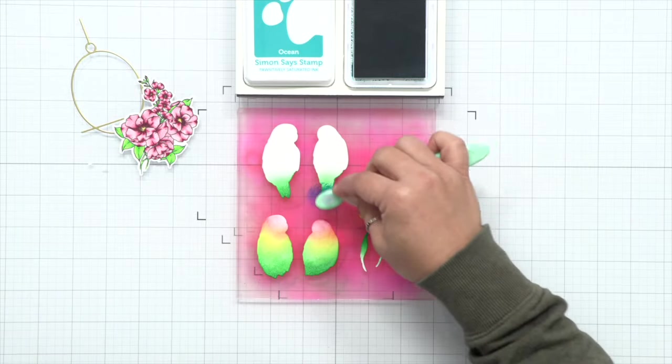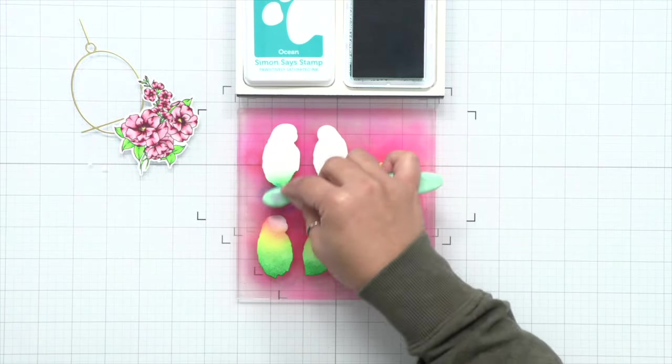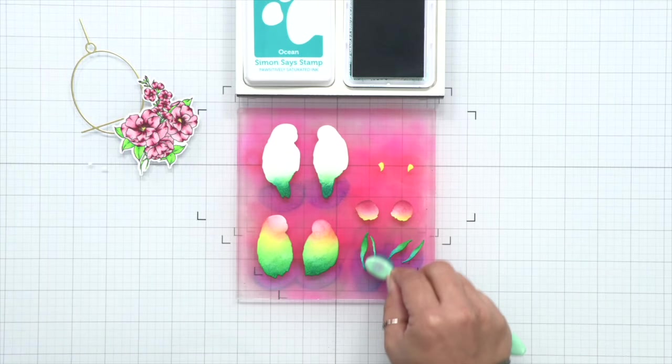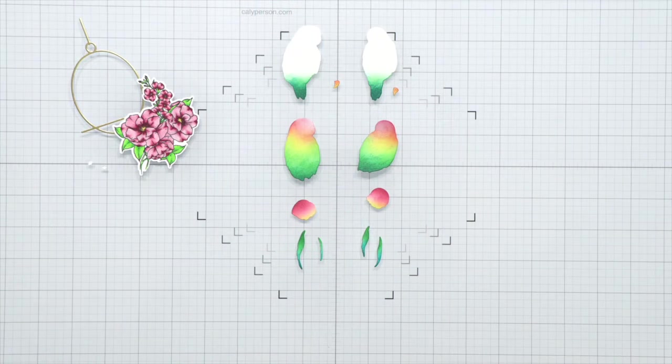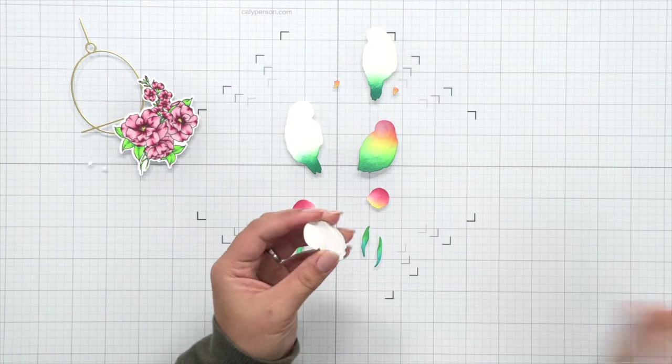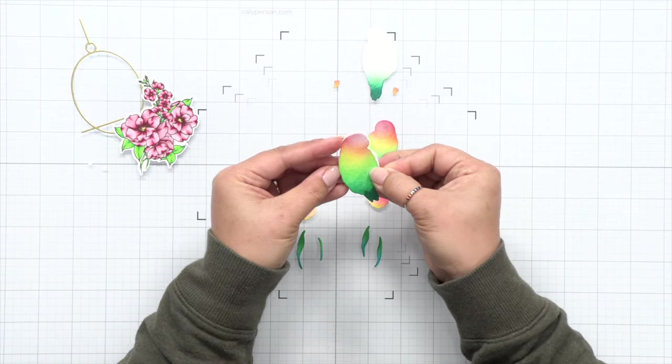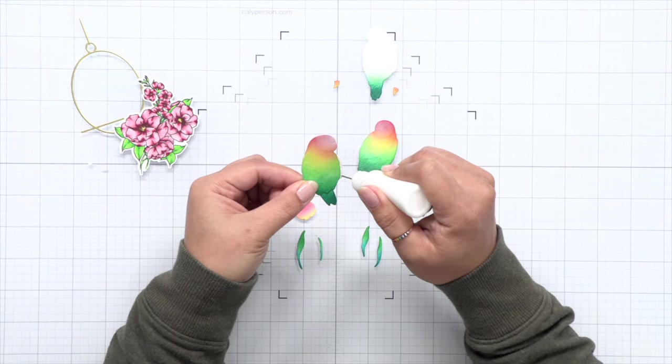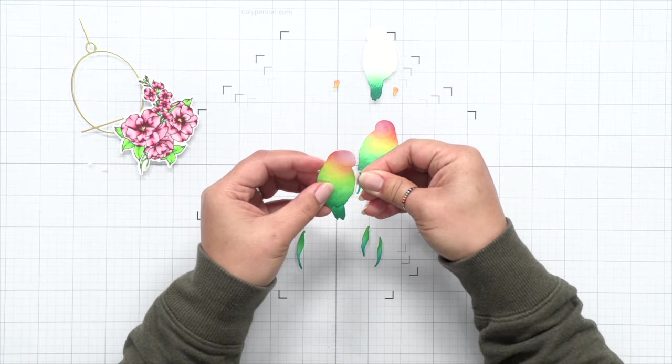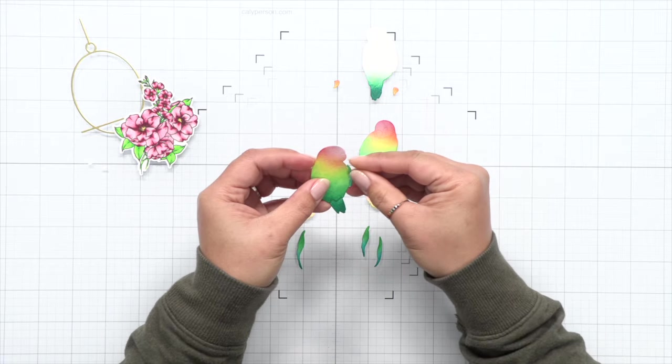And you can make these birds super colorful in any colors that you would like: teals, blues, pinks. I'm using some traditional parrot colors. I'm using some red on the head and blending yellow down to the green and into the blues. It's just a natural gradient of colors. And it kind of imitates these parrots in real life.